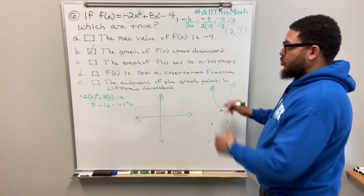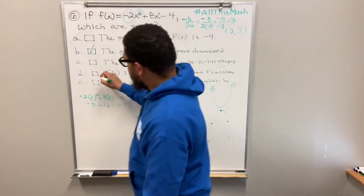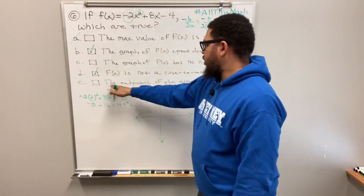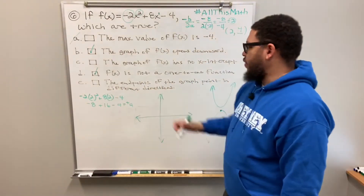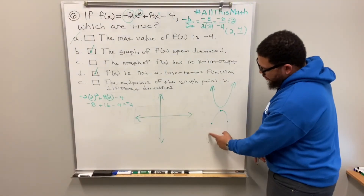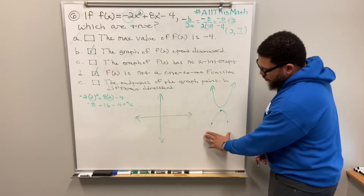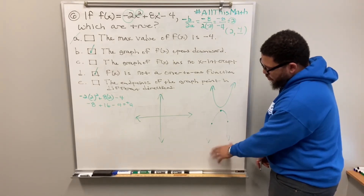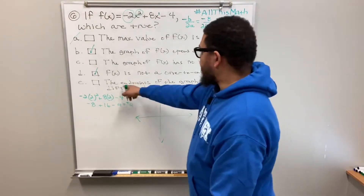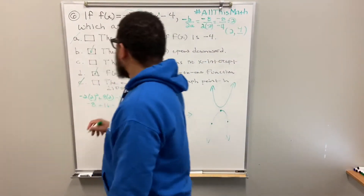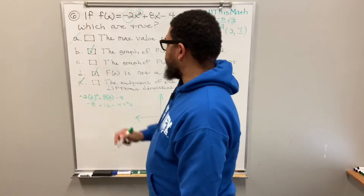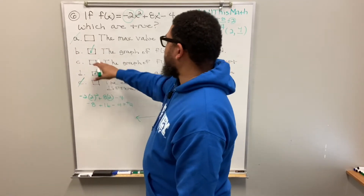Choice E says the endpoints of the graph point in different directions. I already showed the graph opens downward like an upside-down U — both ends go down in the same direction. So that is not true. So we know A and E are false, and B and D are true. Now we just need to figure out if C is also correct.